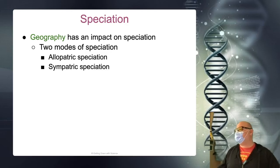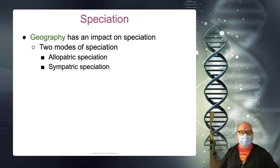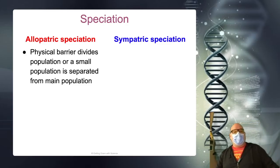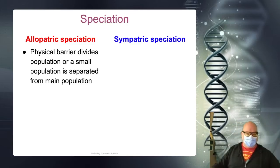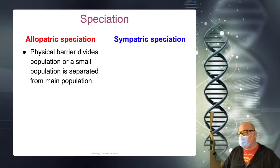If you can remember what those roots mean — people who learn word roots and can break down new words tend to be very academically successful. Allopatric means separated by a physical barrier. So the parent population is separated. This would be like your finches, like things that made it to Hawaii, or like the two sides of the Grand Canyon. That's allopatric.